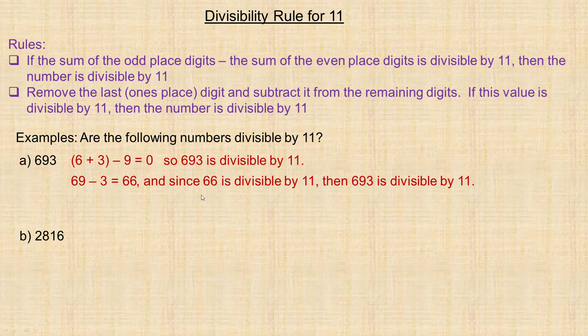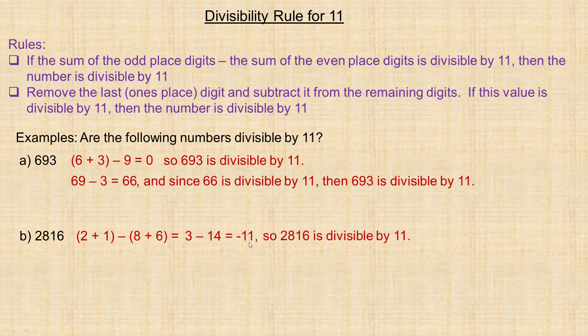For 2816, we add the odd-place digits — 2 and 1 — to get 3, and the even-place digits — 8 and 6 — to get 14. Then 3 minus 14 equals negative 11. That's why order doesn't matter: doing it the other way gives positive 11. Either way, it's a multiple of 11, so 2816 is divisible by 11.